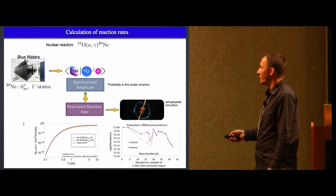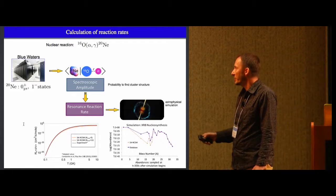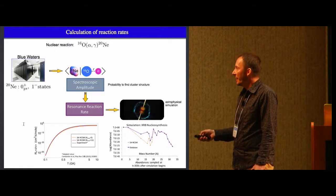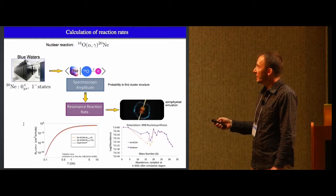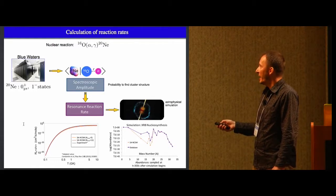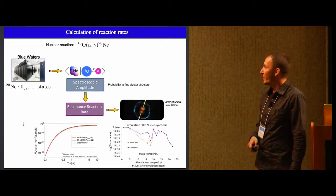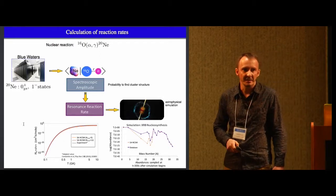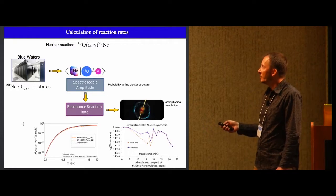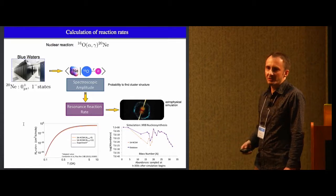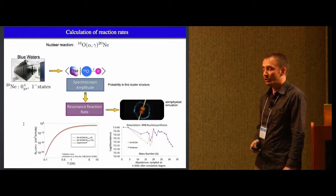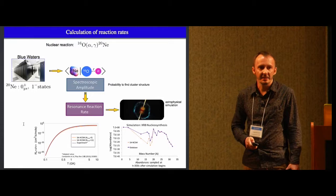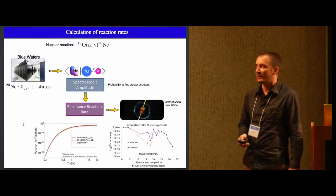So this graph shows reaction rate as a function of temperature. And you see a reasonable agreement with experiment. However, when we take this single reaction rate and we feed it to astrophysical simulation and calculate abundances of elements during X-ray burst nucleosynthesis, we see how sensitive it is to nuclear reaction rate. So just a little change in one reaction rate can give you orders of magnitude change in abundances in X-ray burst nucleosynthesis. So this just shows how challenging our research is and that we have lots of space for improvement.